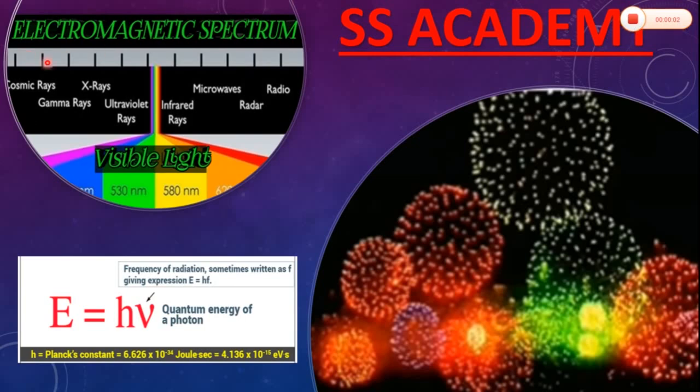Today's topic is the Electromagnetic Spectrum. The word spectrum, or its plural spectra, was first used scientifically in optics by Newton in the 17th century. It was used to describe the rainbow of colors in visible light after passing it through a prism. With the advancement in scientific understanding of light, it is now applied to the entire electromagnetic spectrum.